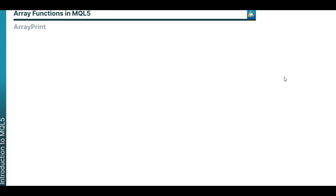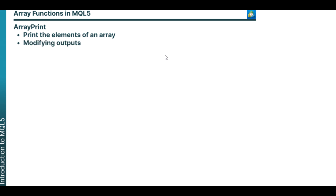The first function we'll be discussing is ArrayPrint, and ArrayPrint is one of the most important array functions in MQL5, as we'll be using it from time to time in this video. It can be used to print out the elements of an array just like any other print function in MQL5.